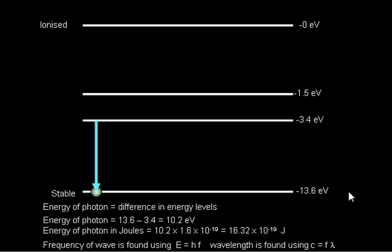So, just to summarize then. The energy of the released photon is the same as the energy difference between the energy levels that the electron drops.